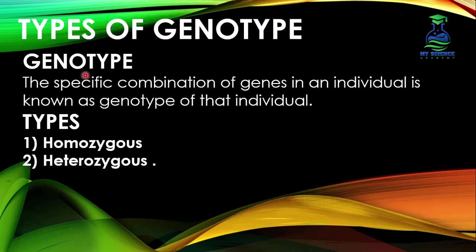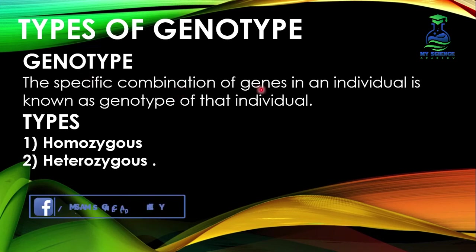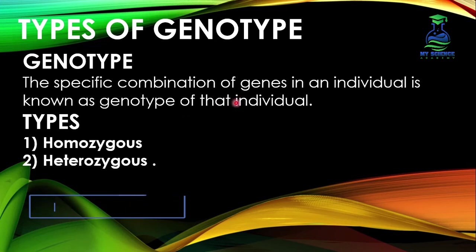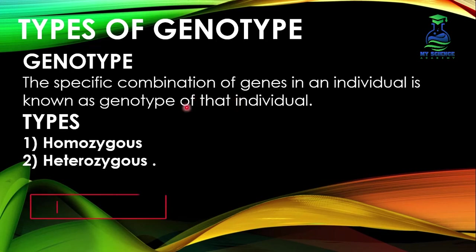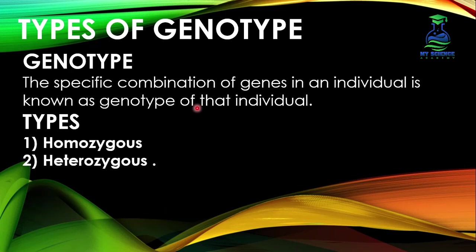What is genotype? The specific combination of genes in an individual is known as the genotype of that individual. In any organism, it is called the complete genetic makeup, or we can say a set of genes that is responsible for the determination of specific traits in an individual. Genotype is responsible for determining a specific trait in any individual.